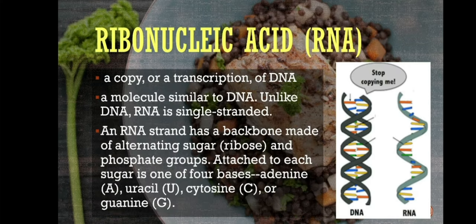RNA, or ribonucleic acid, is a copy or transcription of DNA. Unlike DNA, RNA is single-stranded. An RNA strand has a backbone made of alternating sugar (ribose) and phosphate groups. Attached to each sugar is one of four bases: adenine, uracil, cytosine, or guanine.